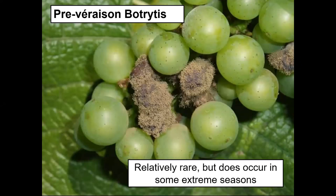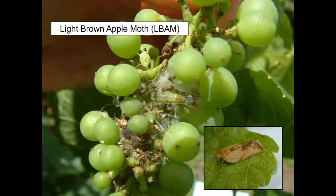Pre-veraison Botrytis is relatively rare, though it does occur in some extreme seasons with high rainfall early in the season. In these cases, a little sugar is just developing in the berries at the cusp of veraison and Botrytis starts to kick off at that point. There are several infection pathways, one being via insect damage — light brown apple moth, which is a problem here in Australia.